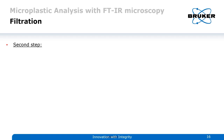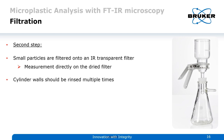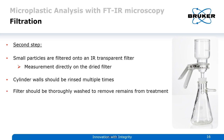The second step of filtration: after removing particles too big for the microscope, we filter all the small particles onto an IR-transparent filter — because we will shine light through them rather than measuring in ATR. We measure the particles directly on the dried filter. Before finalizing, the cylinder walls should be rinsed multiple times since particles tend to stick to them, and the filter should be washed thoroughly to remove any contamination or remains from sample treatment.